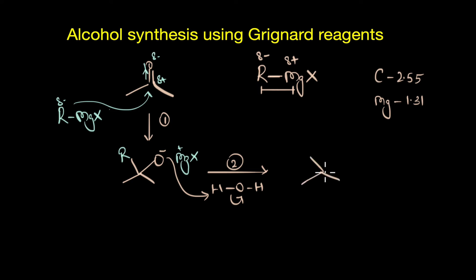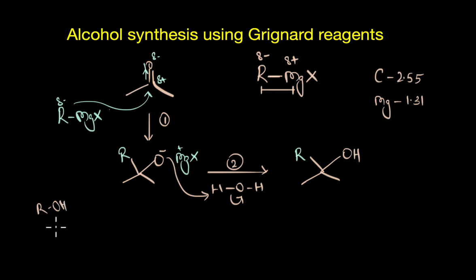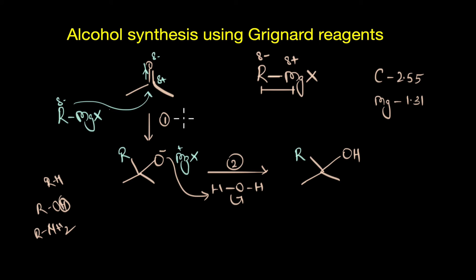This gives us the final alcohol. It is important to remember that we add water or perform the hydrolysis step only after the first step is completely done. The carbon is not just a strong nucleophile but also a strong base — if there is any presence of water or any compound with an acidic hydrogen, like alcohols or amines (NH2), the Grignard reagent gets deactivated because R will simply abstract the acidic proton and become a simple hydrocarbon. This is why we carry out the first step in the presence of dry ether.